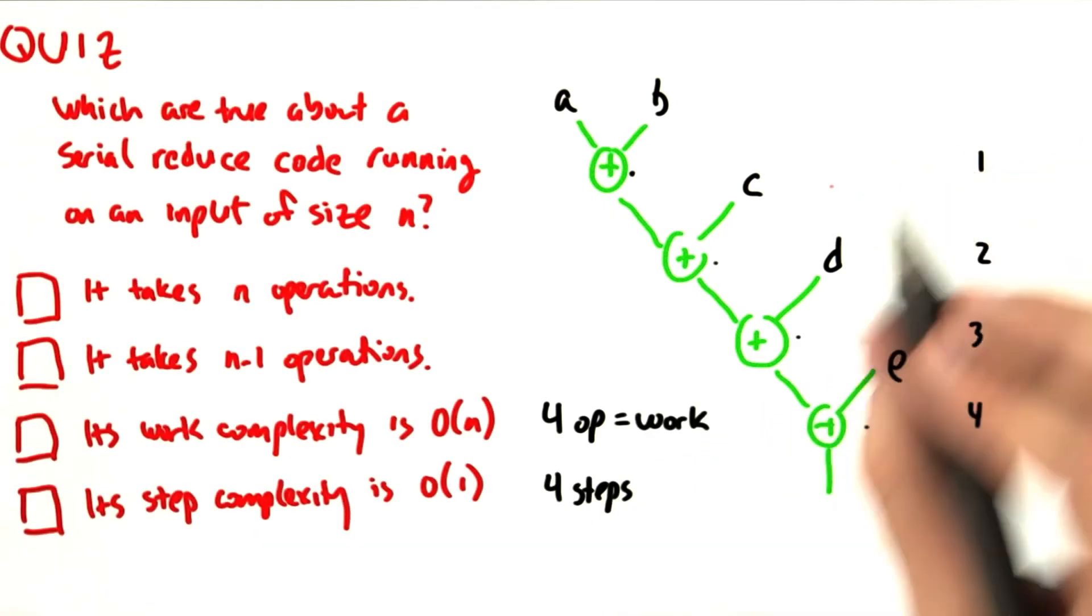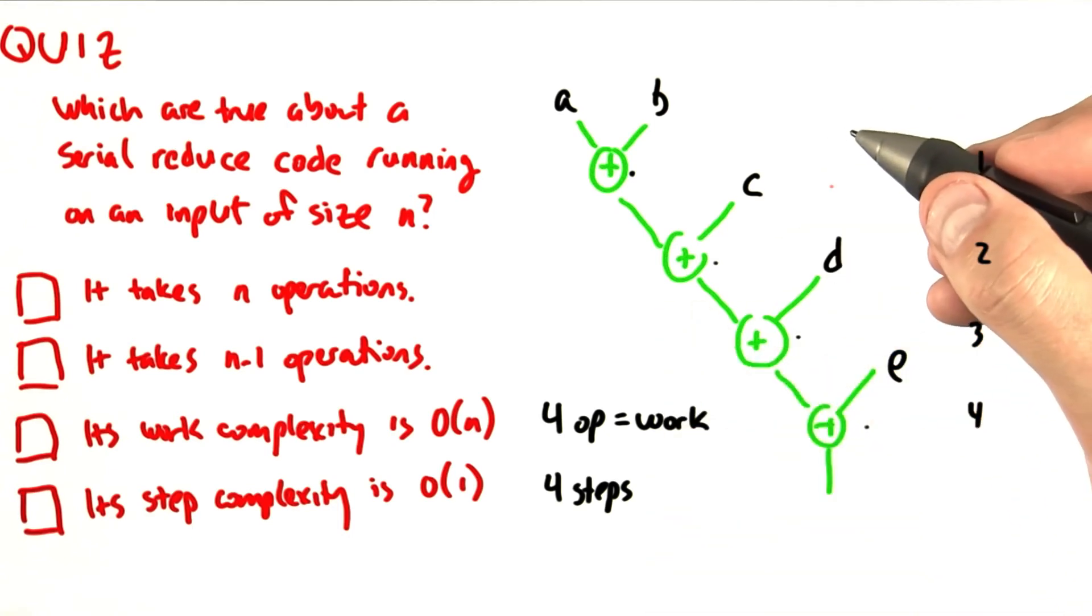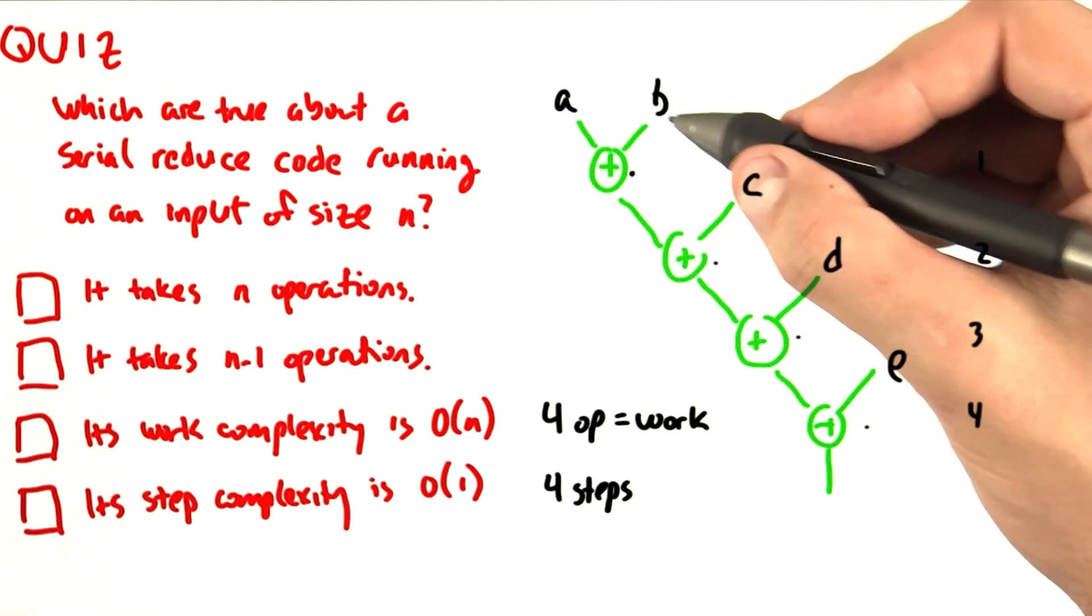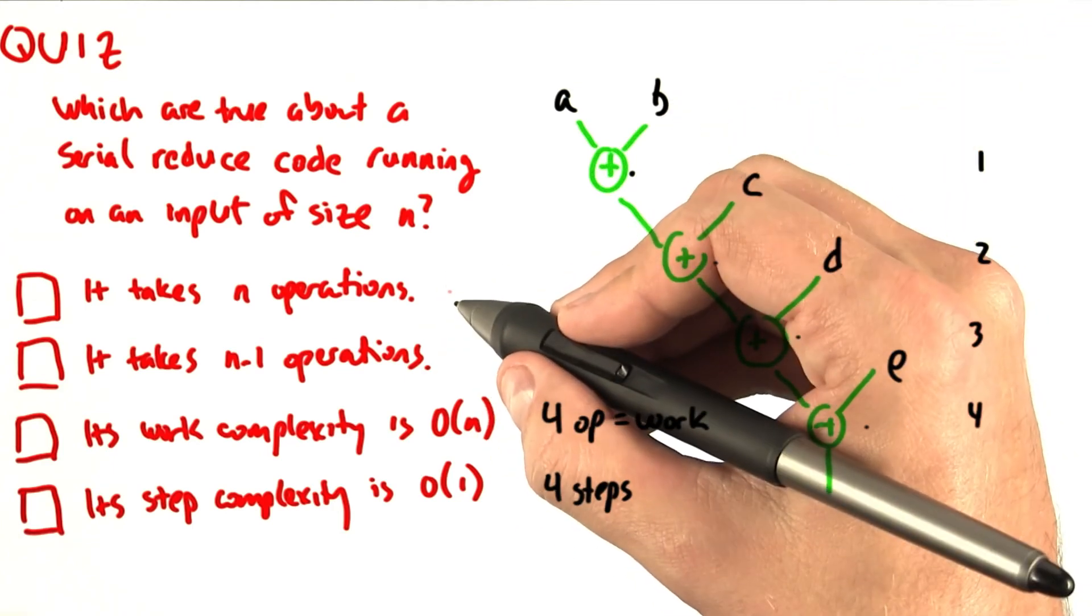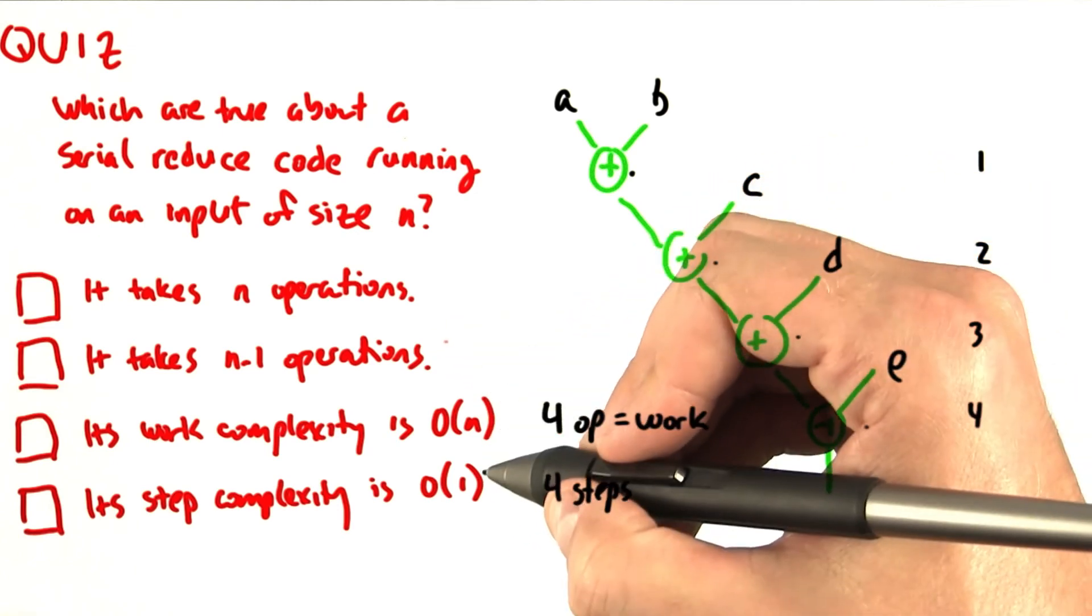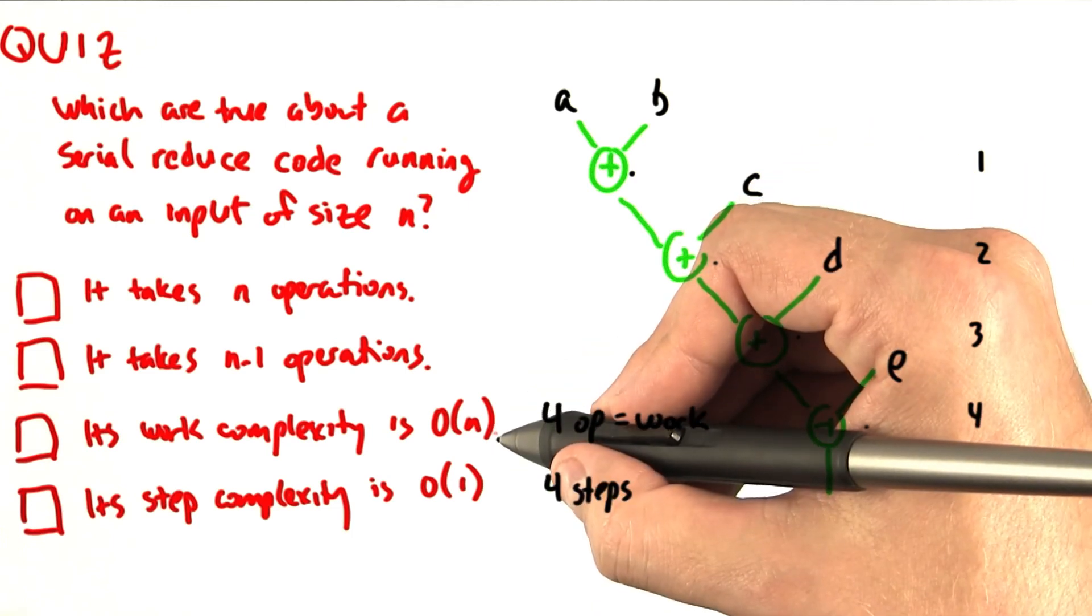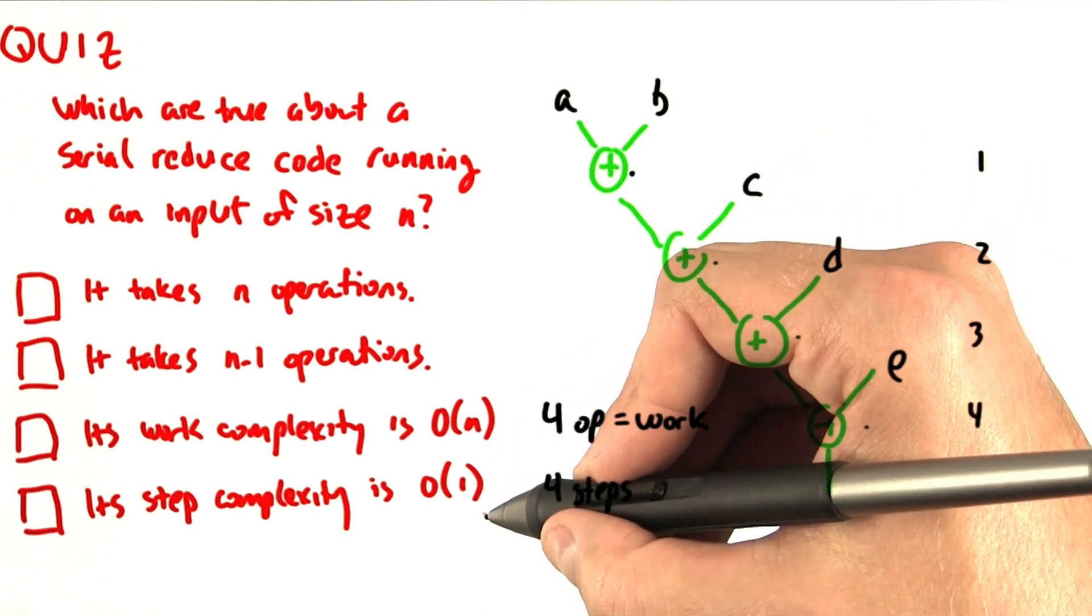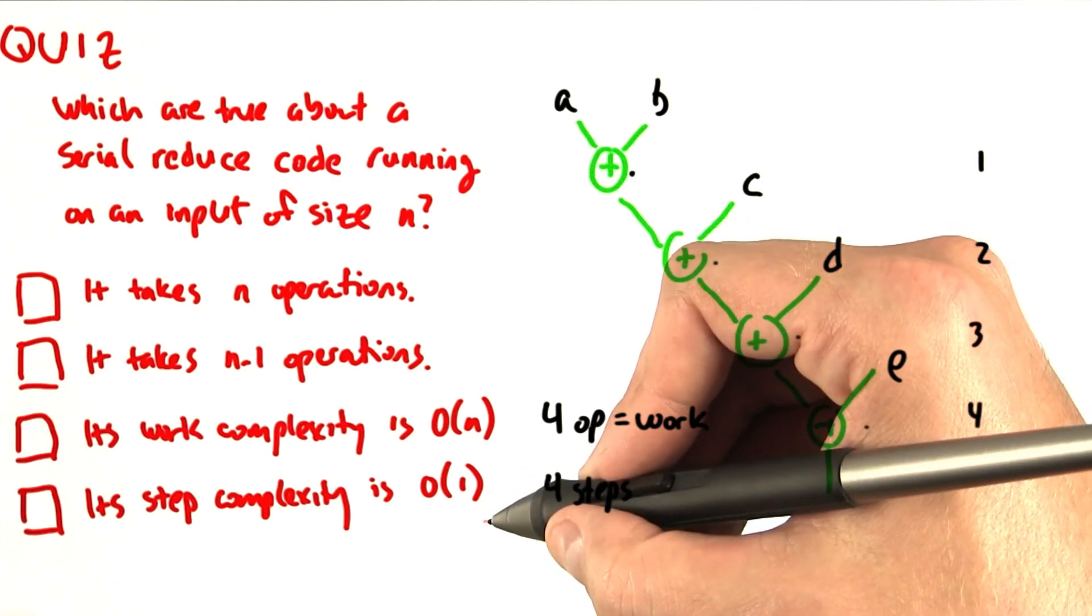So a quiz, which of these four statements are true about a serial reduction code running on an input of size n, arbitrary size? First, it takes n operations. Then it takes n-1 operations. Or its work complexity is order of n, proportional to the size of the input. Or its step complexity is order of 1, independent of the size of the input. So please check which ones are true.